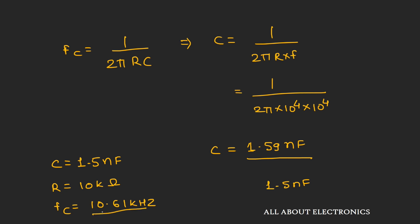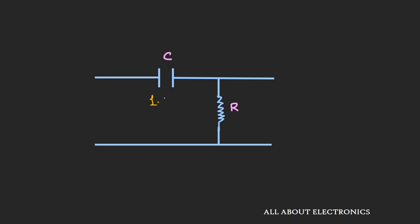To get exactly 10 kHz, we keep C = 1.59 nF and replace the 10 kΩ fixed resistor with a 20 kΩ potentiometer. By adjusting this pot, we can get the exact cutoff frequency of 10 kHz. In this way, we can design a high pass filter of any given cutoff frequency.